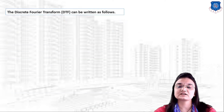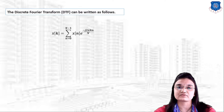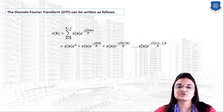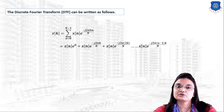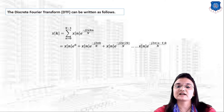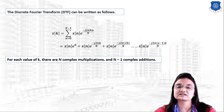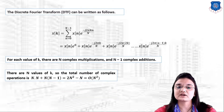In the DFT we have: X(k) = Σ (n=0 to N−1) x(n) · e^(−j2πkn/N). By expanding this equation we get terms from n=0 through n=N−1. For each value of k there are N complex multiplications and N−1 complex additions.